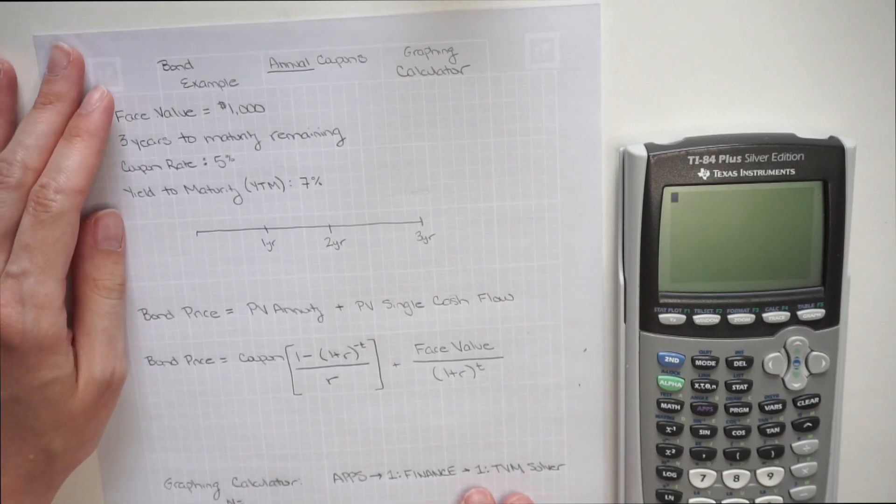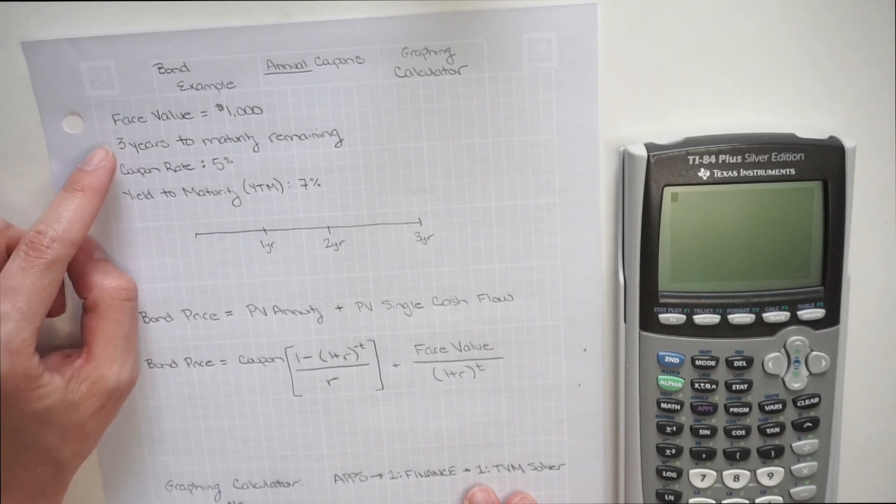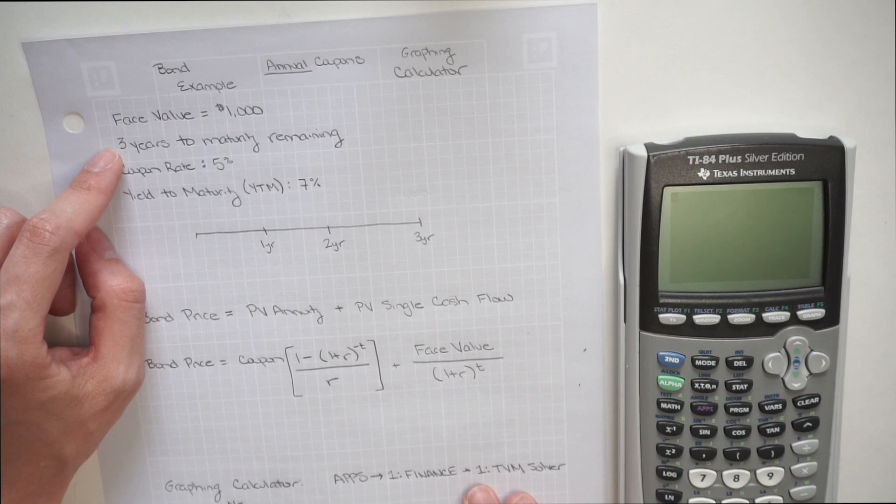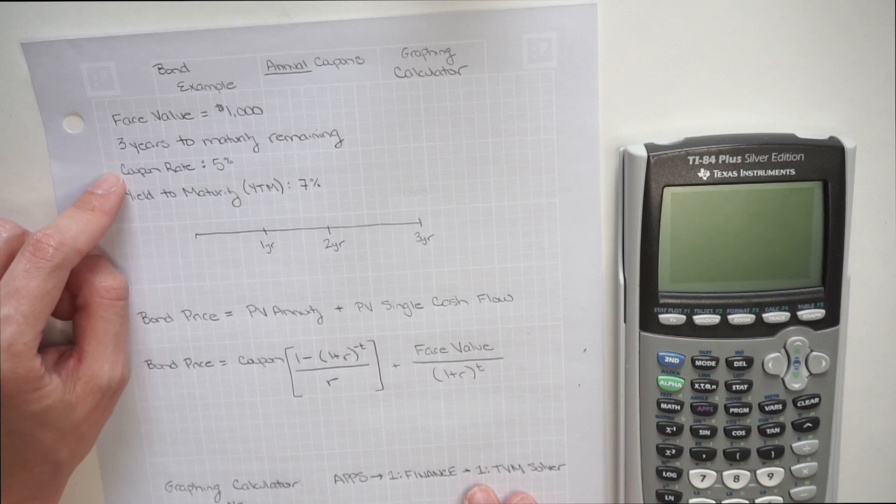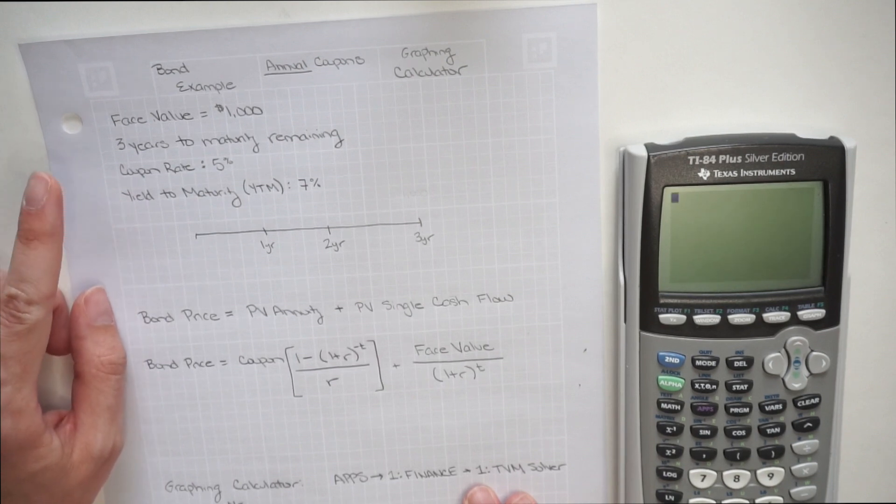So let's start off with the different inputs here. First up, we have a face value of $1,000, three years to maturity remaining, a coupon rate of 5%, and a yield to maturity of 7%.